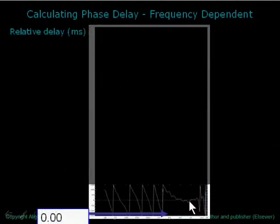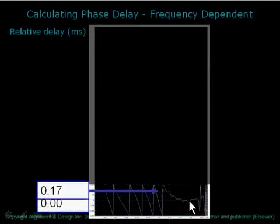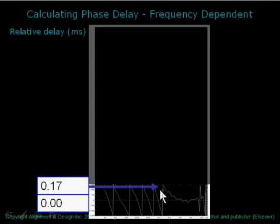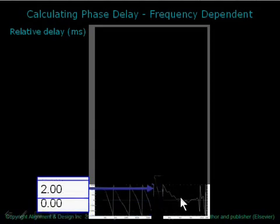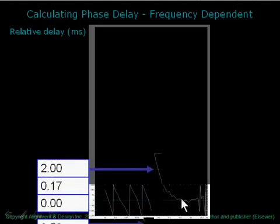Once again, we will unwrap the phase spiral. This time, we'll use 0 ms as our base at the top end. We can see that we've added 0.1 ms, 0.17 there, 2 ms there.